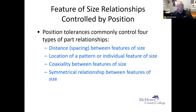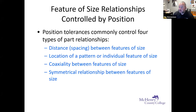Feature of size relationships controlled by position include: spacing between features of size, location of a pattern or individual feature of size, coaxiality between features of size, and symmetrical relationships between features of size. The whiteboard example I just showed would have been location of an individual feature of size.